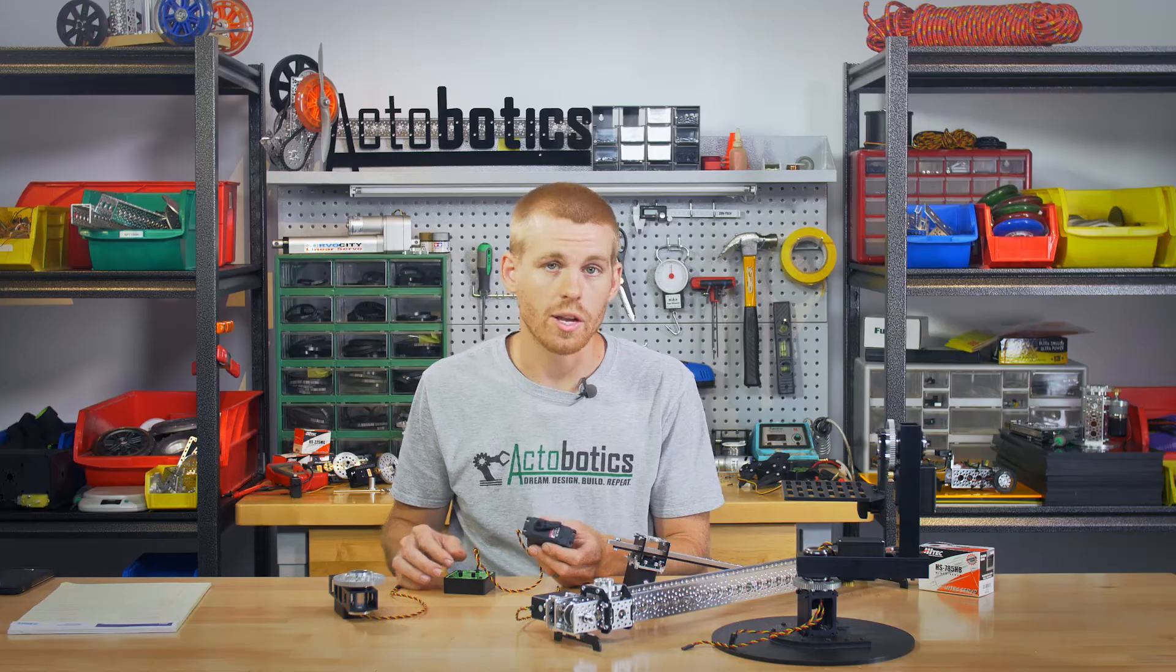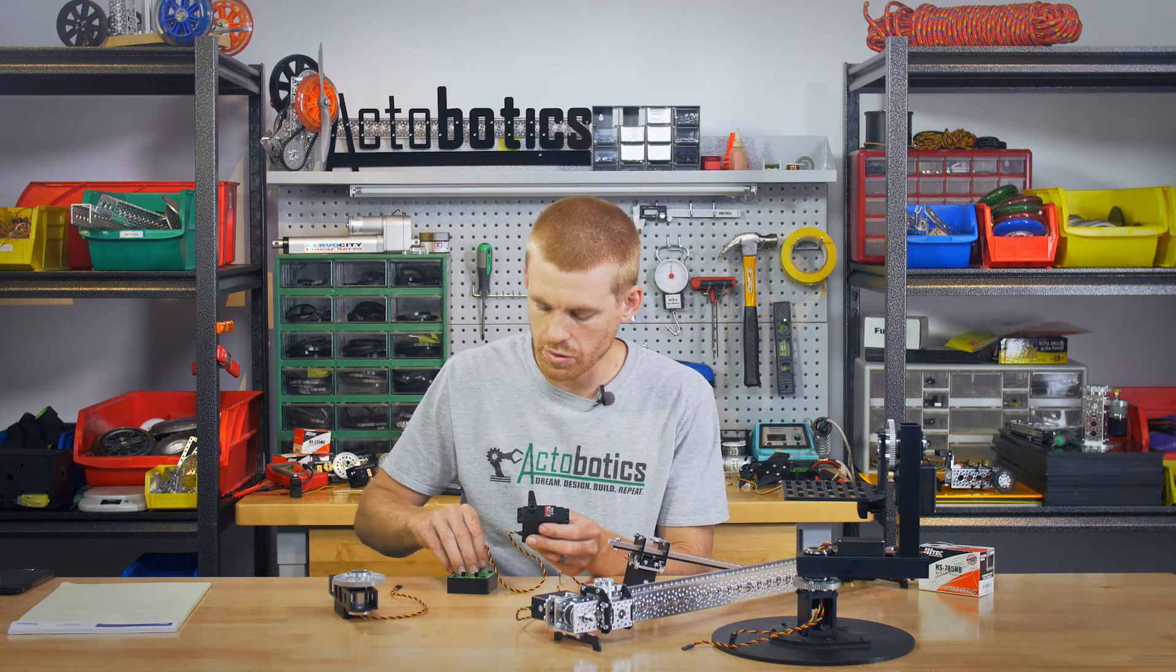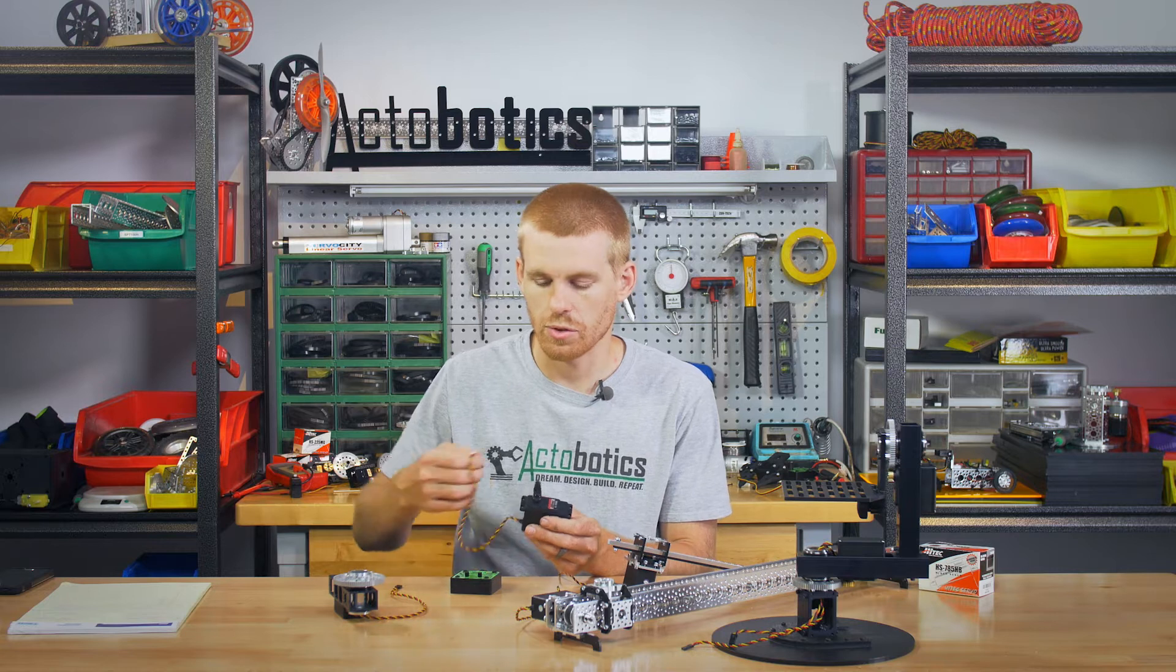This servo has 183 ounces of torque, so it's got good torque running on 6 volts. Its voltage range is 4.8 to 6 volts.